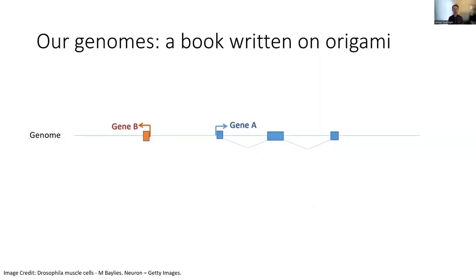The instructions to build an organism are written in its genome, but these instructions are not read out in a simple linear fashion like a book. A portion of the genome specifies how to make all the different building blocks of an organism. These building blocks are the products of the genes, and in humans they comprise less than two percent of the total genome sequence. Of equal importance, the genome must specify which combination of blocks and how many of each type get used to make each different cell type.